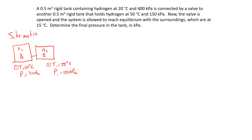The valve is opened and the system is allowed to reach equilibrium with its surroundings, which is at a temperature of 15 degrees Celsius. The hydrogen in both tanks is allowed to equilibrate until it reaches the same temperature as the ambient air. Determine the final pressure in the tank — the final pressure in both tanks will be the same.